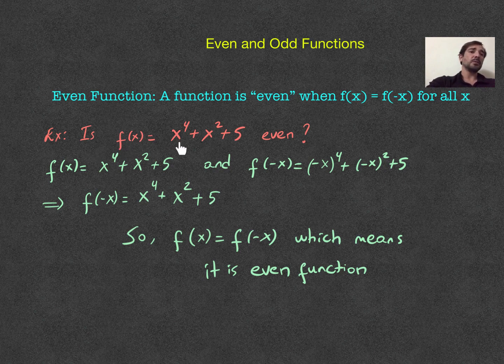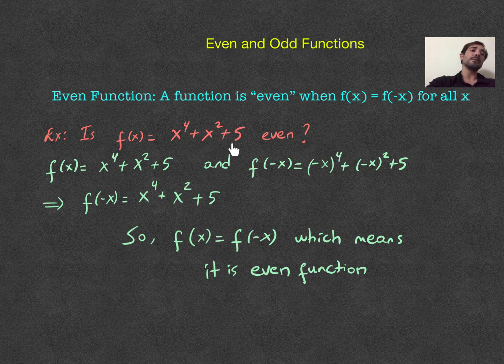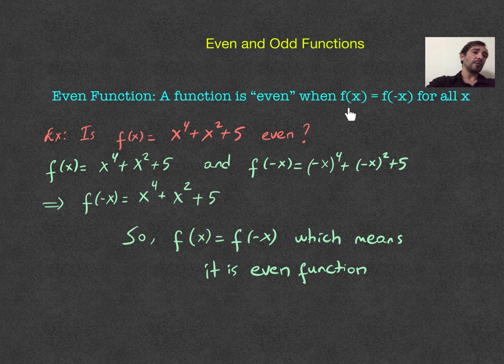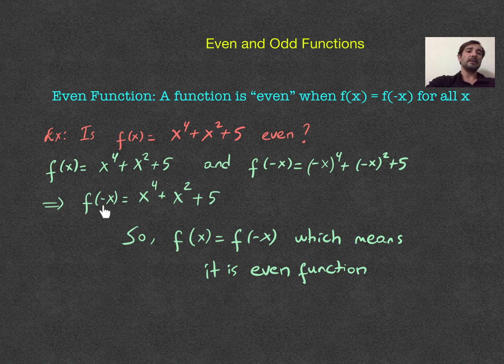Let's say f of x is given as x power of 4 plus x square and plus 5. And we want to show that whether it is even or not. So, for that reason, let me go back to my theorem. f of x should be equal to f negative x. So, I'm going to get f negative x.